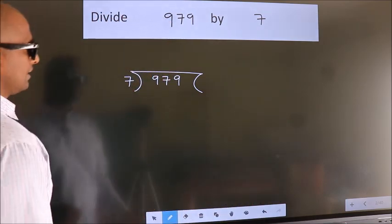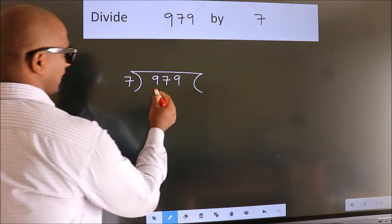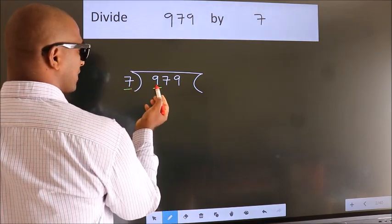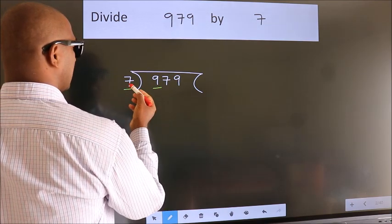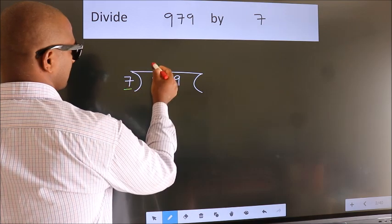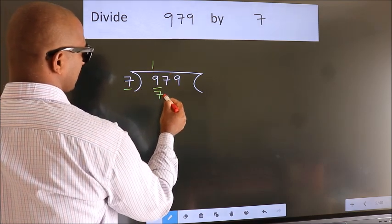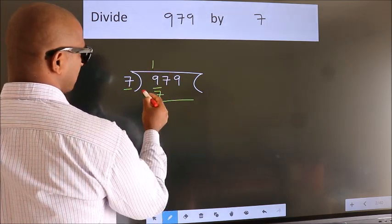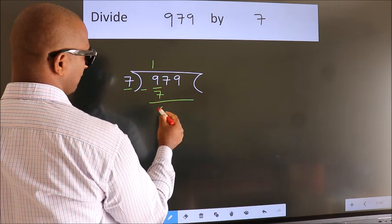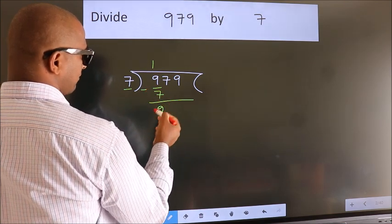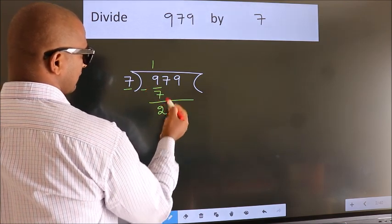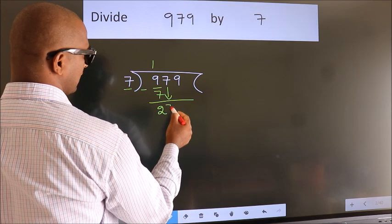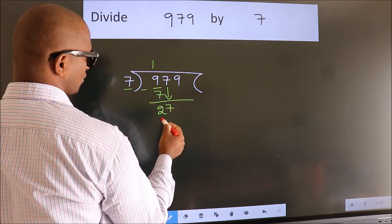Next, here we have 9 and here 7. A number close to 9 in the 7 times table is 7 ones, which is 7. Now we subtract and we get 2. After this, bring down the beside number — so 7 comes down, giving us 27.